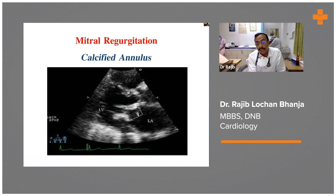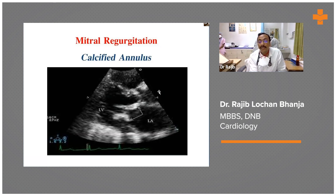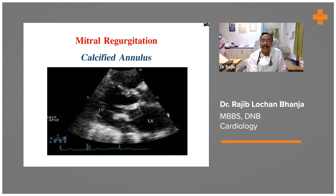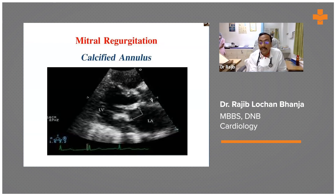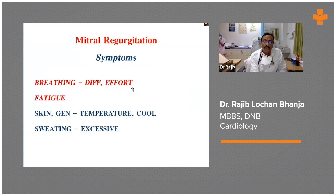In acute mitral regurgitation, the left atrial pressure is not able to accommodate the sudden volume, so patients immediately go into acute pulmonary edema. Compare this with chronic mitral regurgitation, which gradually leads to heart failure with LV dysfunction and severe mitral regurgitation. In acute mitral regurgitation, patients immediately develop acute pulmonary edema. Common symptoms include exercise intolerance and fatigability.